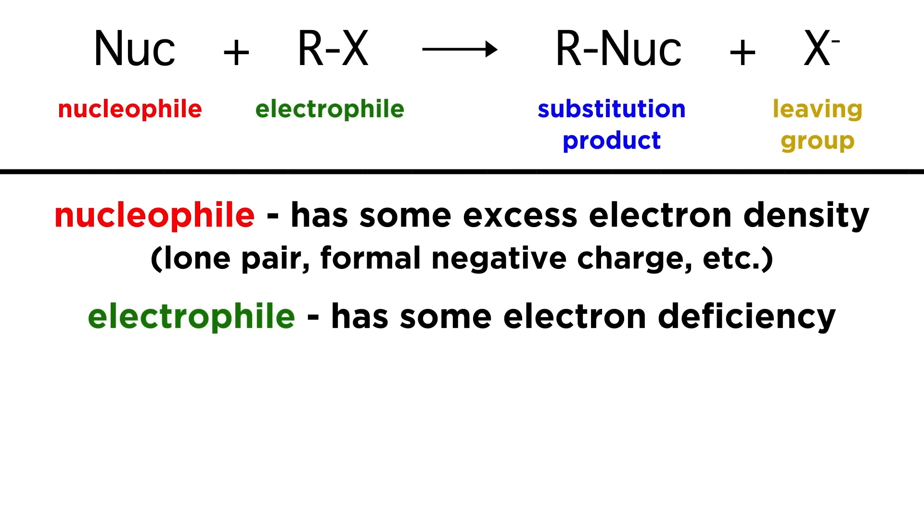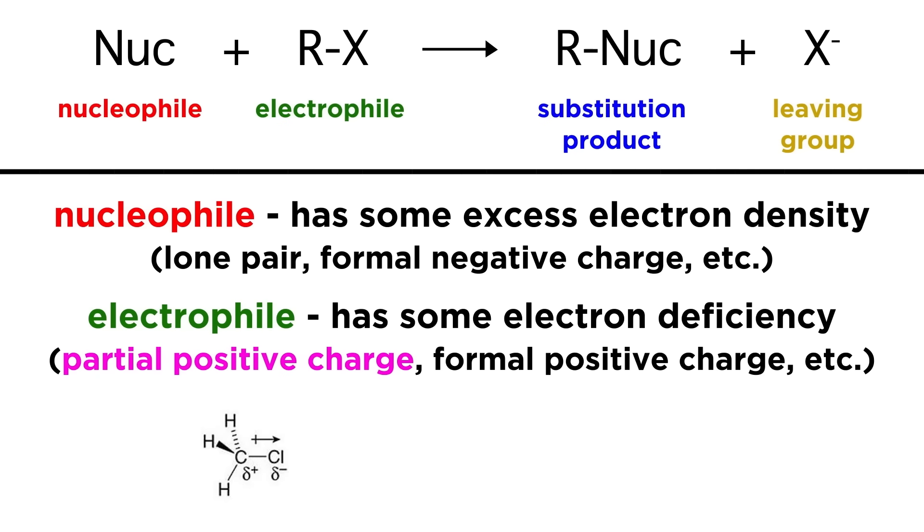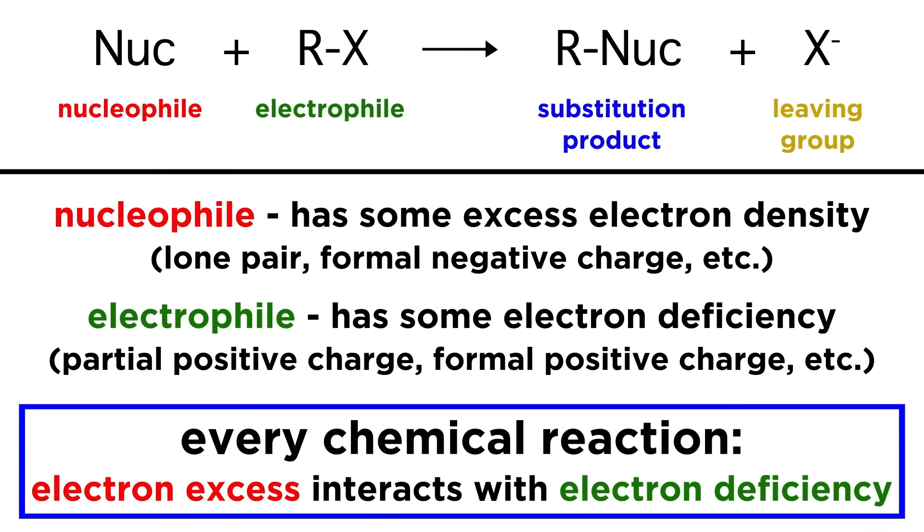An electrophile is an atom or molecule that has some region of electron deficiency. This could be an atom with a partial positive charge due to being bonded to an electronegative atom. This could be a formal positive charge. It's a region that is deficient in electron density. In any chemical reaction, some region of electron excess interacts with some region of electron deficiency.